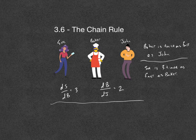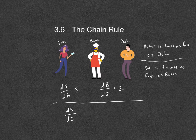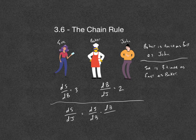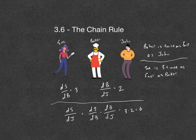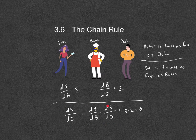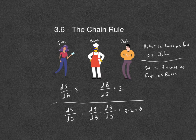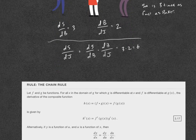If I wanted to know the rate of change of Sue with respect to John — how much faster is Sue than John — that would be Sue's rate of change with respect to the baker times the baker's rate of change with respect to John. You may have already known that to compare Sue to John, you do three times two and get six. She is six times faster than John. You didn't need calculus to know that, but we can introduce this formal notation — that's where intuitively the chain rule comes from.